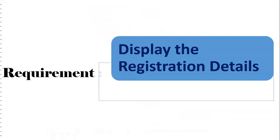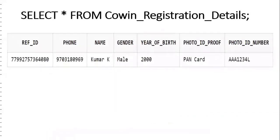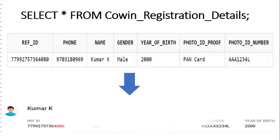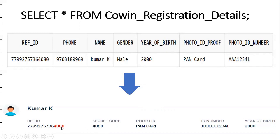The next requirement is: after registering, we need to display the registration details to the user. The first step is to capture the details; the second step is to display the registration results. Looking at the database versus what we display to the user — the reference_id comes from the database, but the 'secret code' is not stored in the database. We need to extract the last four digits of the reference_id. For example, '0000' is the secret code, extracted using SUBSTR(ref_id, -4).